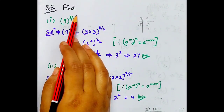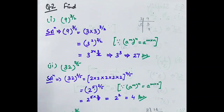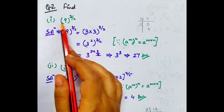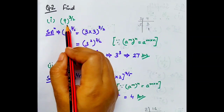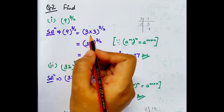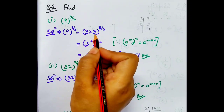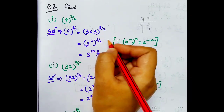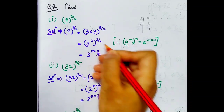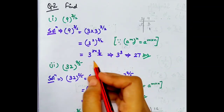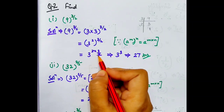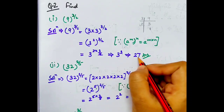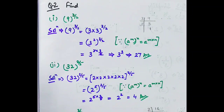Question number 2. Find. Is question mein bhi hume question number 1 ki tarah hi questions ko solve karna hai. First part: 9 whole to the power 3 by 2. 9 ko hum 3 into 3 likh sakte hain, jisko parts ke form mein likhenge: 3 to the power 2, whole to the power 3 by 2. Power of power ke form mein, dono powers multiply ho jayengi. 3 to the power 3, means 3 cube, ka answer 27 hota hai.